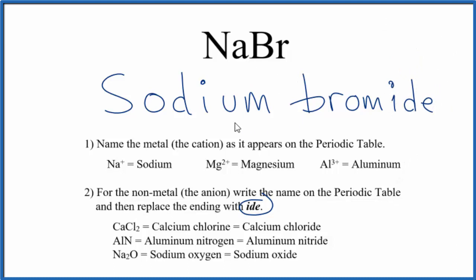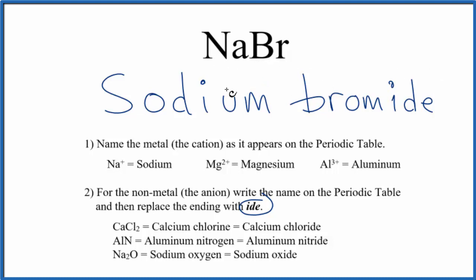So the name for NaBr is sodium bromide. If we were given the name and wanted to get back to the formula, sodium has a 1 plus ionic charge, bromine forms ions with 1 minus. So the 1 plus and the 1 minus cancel out, so we only need NaBr. This is Dr. B with the name for NaBr — sodium bromide. Thanks for watching.